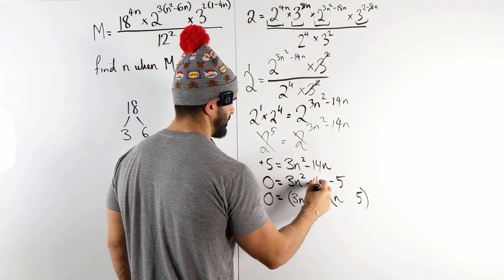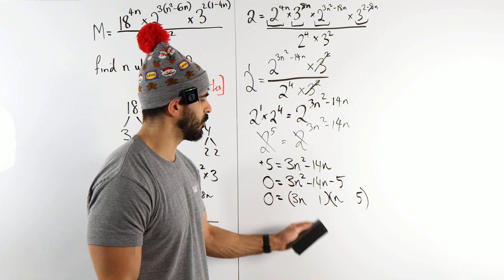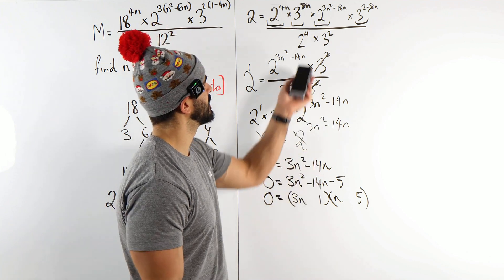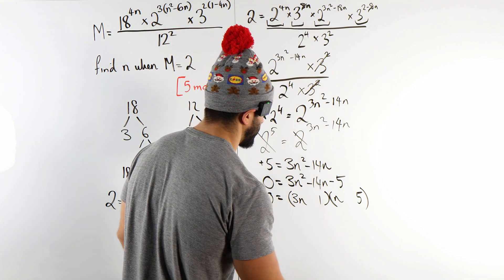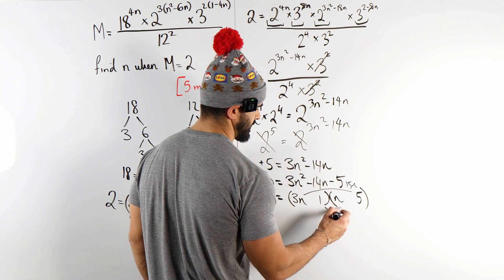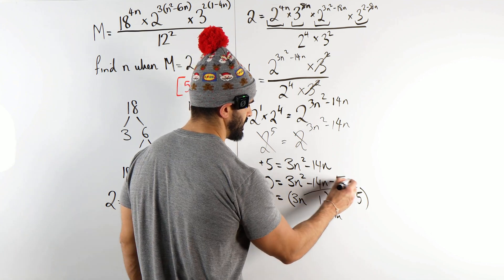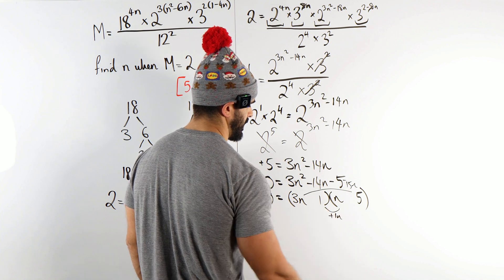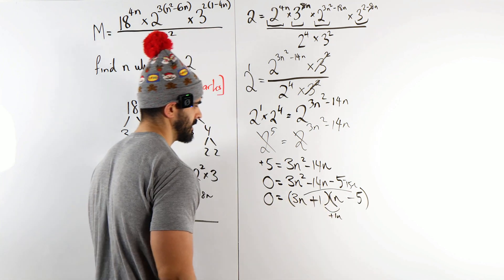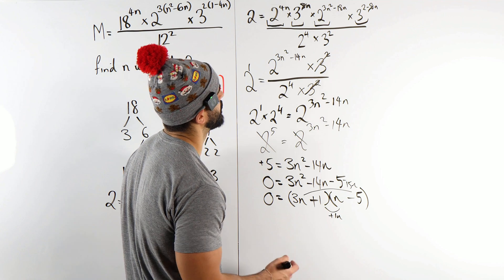So we've got 3n times 5 is 15n, and this gives me 1n. How does 15n and 1n make minus 14? Is if you have minus 15 plus 1. So you have minus plus. That's quick time factorized. Just make sure you guys know what 4 minus 18 is. So you have 3n plus 1.